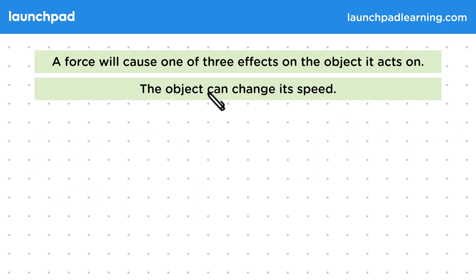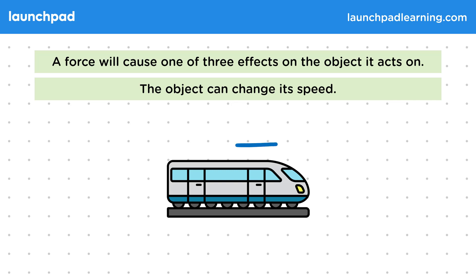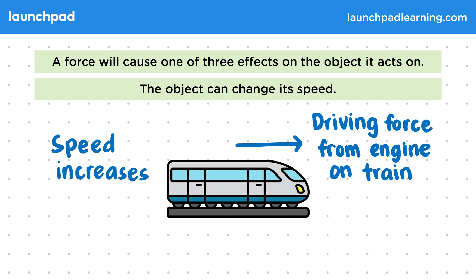The object could also change its speed. So let's look at a train accelerating. The driving force from the engine causes the train to change speed, so the speed increases. The force can also cause a stationary object to start moving. The force causes this change in speed by doing work on the object to give it kinetic energy. So if there's no force, then the train will continue to travel at the same speed.